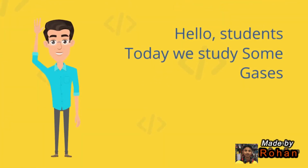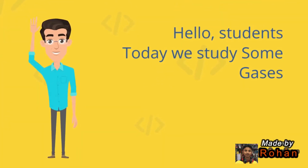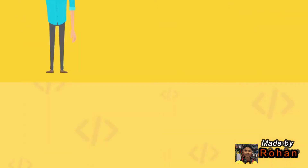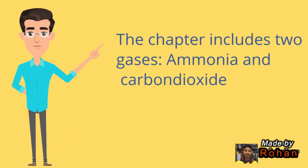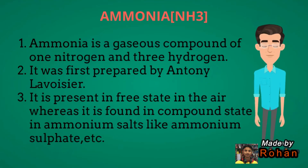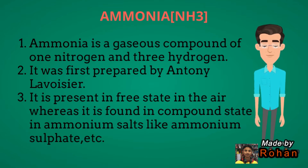Today we study some gases. The chapter includes two gases: ammonia and carbon dioxide. Ammonia is a gaseous compound of one nitrogen and three hydrogen. It was first prepared by Antoine Lavoisier. It is present in free state in the air, whereas it is found in compound state in ammonium salts like ammonium sulfate.